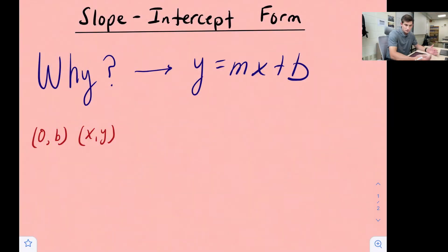Hello everyone, in this video we're going to look at slope-intercept form and more specifically why do we use the equation y equals mx plus b. Where did it come from?